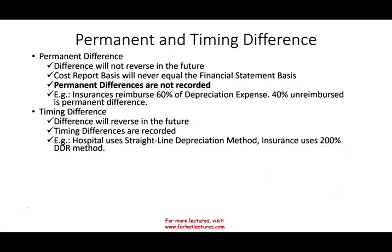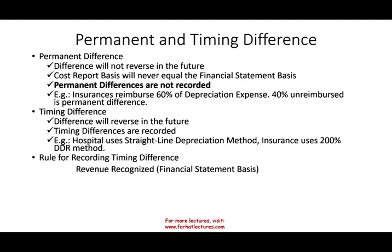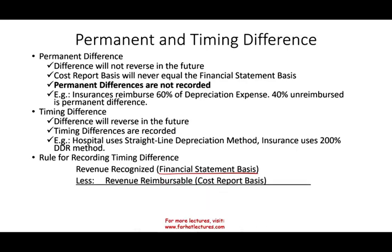So how do we compute and record the timing difference? Here's the formula: we look at revenue recognized for the financial statement basis and subtract revenue reimbursed — basically the revenue coming from the cost report. The difference between those two equals a balance sheet account, usually a liability called deferred revenue. So we look at revenue recognized for financial statements minus revenue recognized based on the cost report. This is for timing, or temporary, differences. The best way to illustrate this is to look at an example.